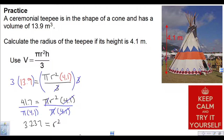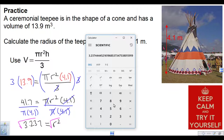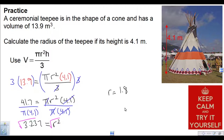That's the radius squared, but I just want the radius, so you need to square root it. R is equal to the square root of 3.237 — that's close enough to 1.8. The radius is 1.8 meters.